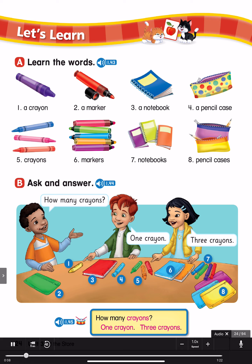How many crayons? One crayon. Three crayons. Number 1: How many crayons? One crayon. Number 2: How many pencil cases? One pencil case. Number 3: How many notebooks? One notebook. Number 4: How many markers?